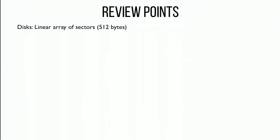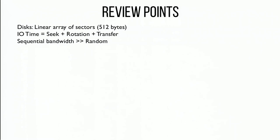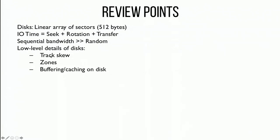The way file systems view a disk is as a linear array of sectors from zero up to the max size. We looked at I/O time — how long it takes to read or write — which has three components: seek time (how long it takes to move the disk arm over the correct track), rotation time (how long for the disk to spin so the sector is under the head), and transfer time, which is very fast. The other main point: sequential bandwidth is much greater than random bandwidth, since sequential I/O is basically all transfer time, while random I/O is dominated by seek and rotation times.